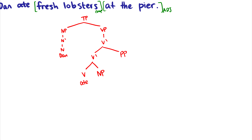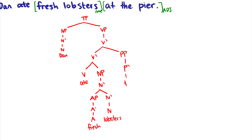Let's do 'fresh lobsters' first. There's no specifier, but there is 'fresh,' which is an adjective and an adjunct for the noun phrase. So this AP will be daughter of an N-bar and sister of an N-bar, going down to the adjective 'fresh.' Then 'lobsters' is the head of the noun phrase. Then 'at the pier': 'at' is the head of the preposition. 'The pier' is the complement of 'at.' 'The' is the specifier of the NP — daughter of NP, sister to the N. And 'pier' is the head of the noun phrase.